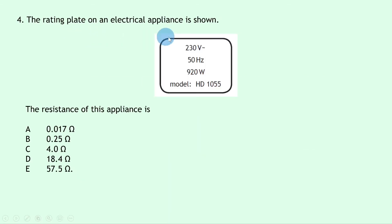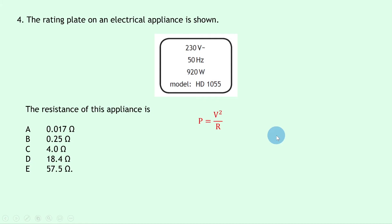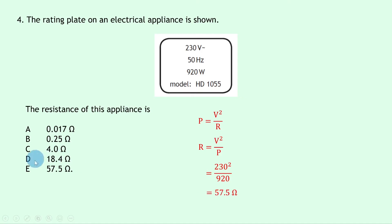Question 4 shows a rating plate with 230 volts, 50 hertz, and 920 watts. We need the resistance, so we use the power equation P = V²/R. Rearranging gives R = V²/P. Substituting in: 230² / 920. Putting that into your calculator gives 57.5 ohms — answer E.